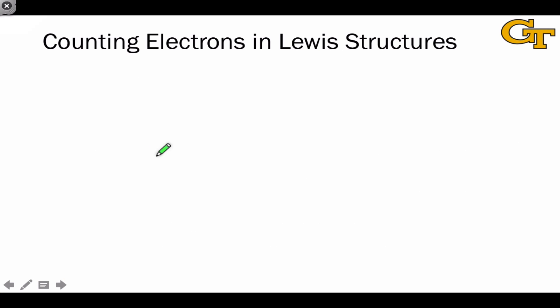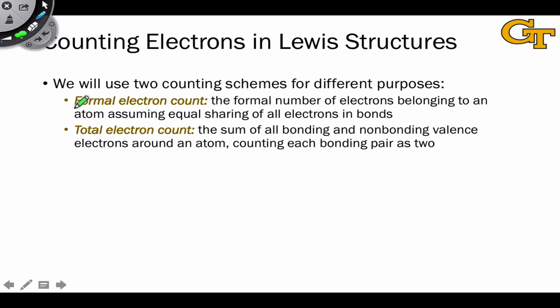We alluded to this already, but there are multiple ways we can think about counting electrons in Lewis structures, depending on the concept or idea that we're working with. We're going to use two different counting schemes for different purposes. The so-called formal electron count, which is used to deal with formal charge, and the so-called total electron count, which is used to assess the octet rule.